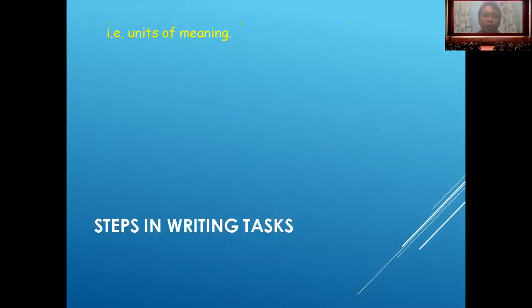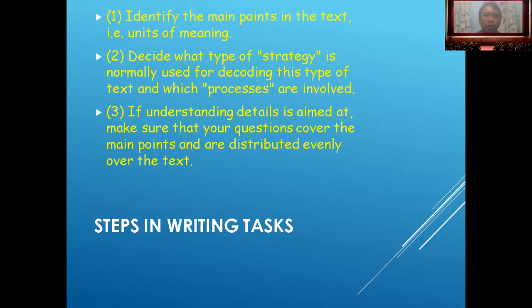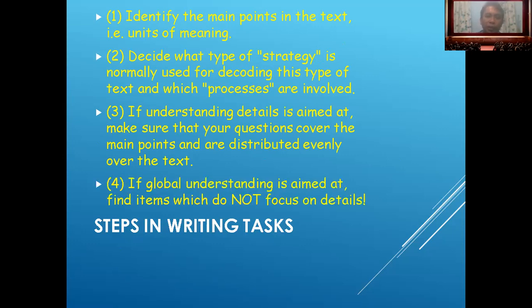Steps in writing: first, identify the main points of the text and its meaning. Decide what type of strategy is normally used for processing this type of text, and which processes are involved. If understanding details is the aim, make sure your questions cover the main points and are distributed evenly over the text. If a global understanding is aimed for, find items which do not focus on details.